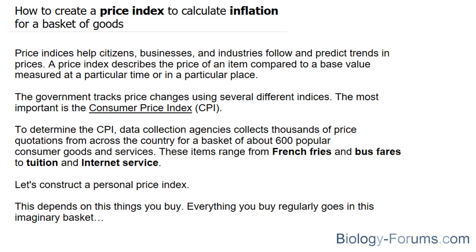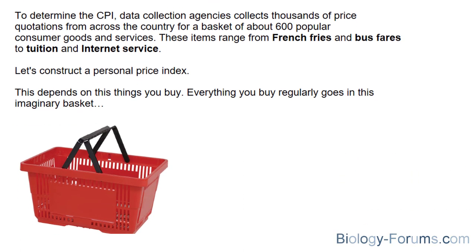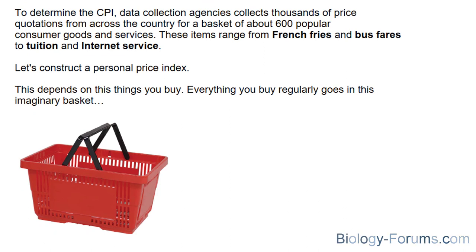To determine the CPI, data collection agencies collect thousands of price quotations from across the country for a basket of up to 600 popular consumer goods and services. These items range from French fries and bus fares to tuition and internet service. Let's construct a personal price index. This depends on the things you buy. Everything you buy regularly goes in this imaginary basket.